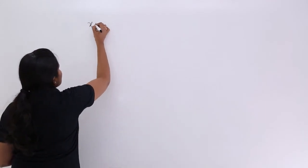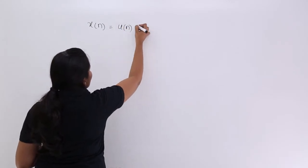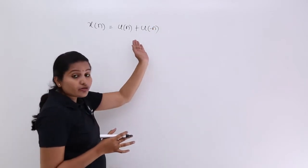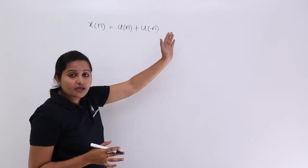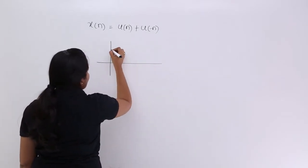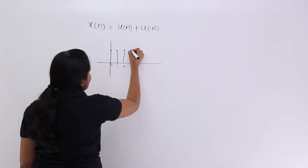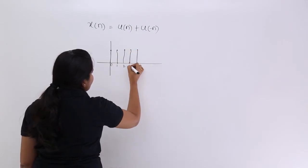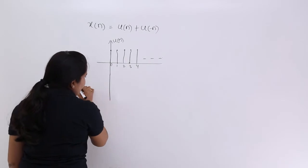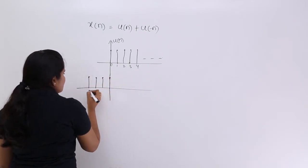For example, if you are having x of n, generally people will think that if you compute u(n) plus u(-n) you are going to get a periodic signal, but this is not at all right. You are not going to get a periodic signal. For example, u(n) starts from 0 and has continuous samples at 1, 2, 3, 4, 5, and so on. If you consider u(-n), you are having samples at 0, minus 1, minus 2, minus 3, and so on.